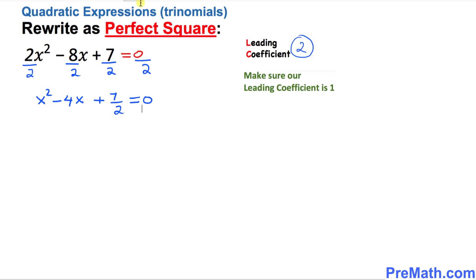So the next step is, we want to make sure that we have only x variables on the left hand side. So that means this 7/2 must go on the other side. So that means we got x² - 4x = -7/2.